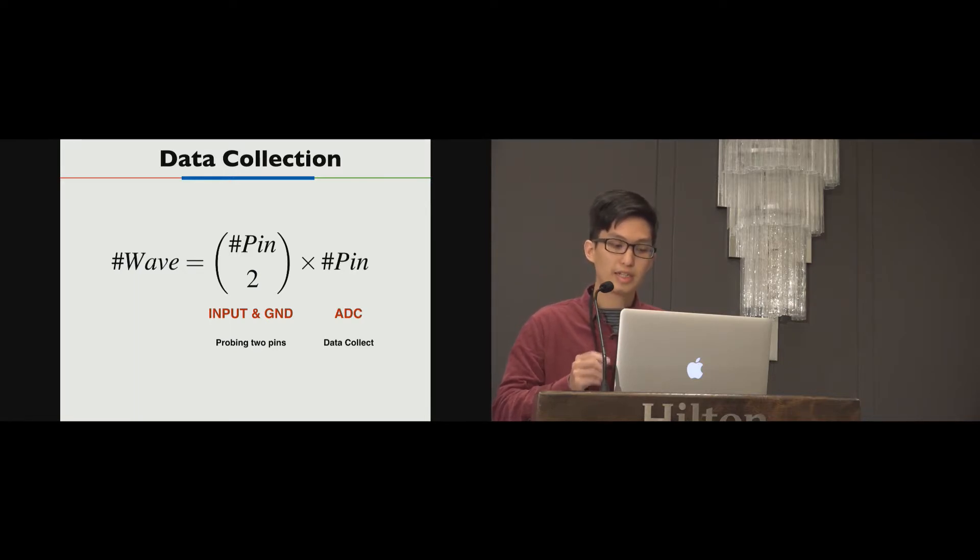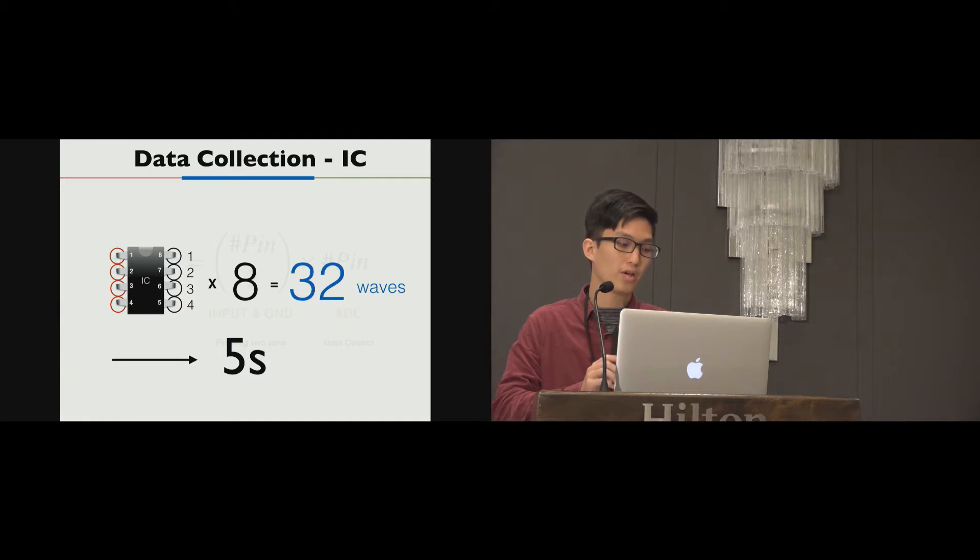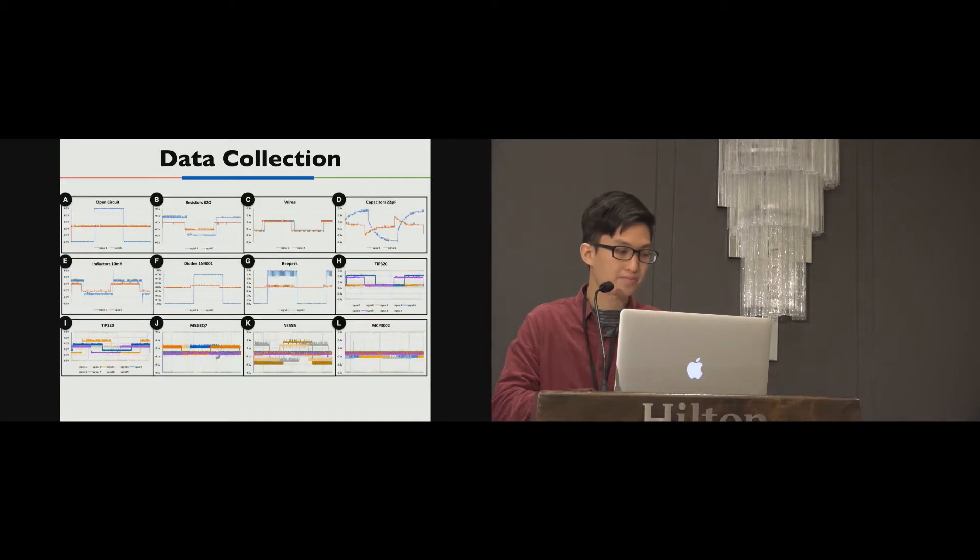In this way, we will get a lot of transform waves. But for this combination, some components like IC chips will require long acquisition time. So in our case, an IC chip will cost about 30 seconds for data acquisition. To lower the acquisition time for an IC, we only capture 32 waves rather than all possible waves. And it only costs about 5 seconds. And then finally, that's how the acquired waveform looks like.